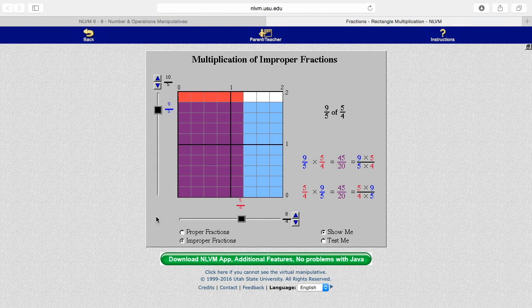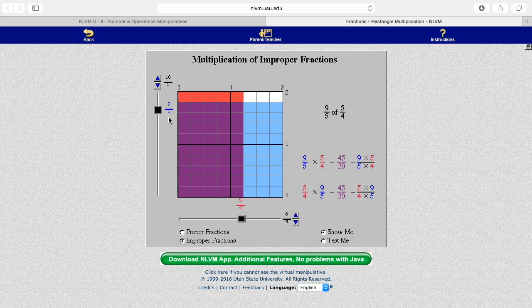You can also do improper fractions. Let's say I wanted to multiply five-fourths by nine-fifths. Notice each rectangle here is like a piece of paper, and each piece of paper is made up of twenty rectangles. And so if I was to add up all the total purples, we have forty-five rectangles out of the twenty, giving us forty-five over twenty, which would reduce down to nine-fourths.